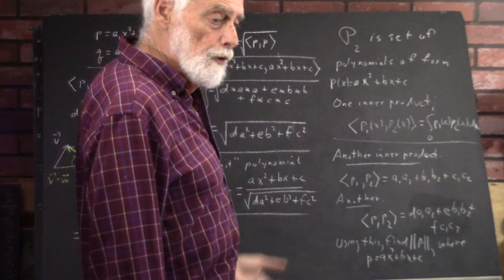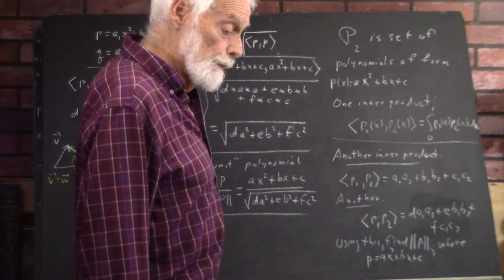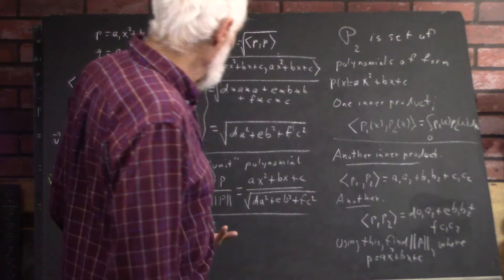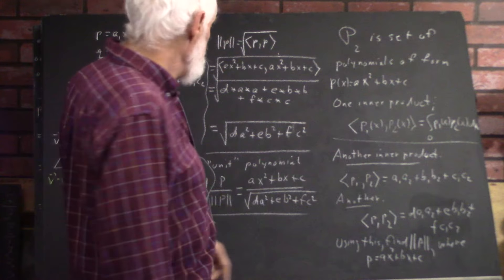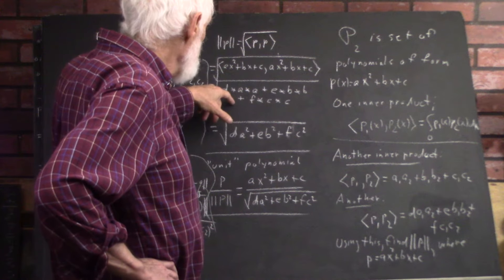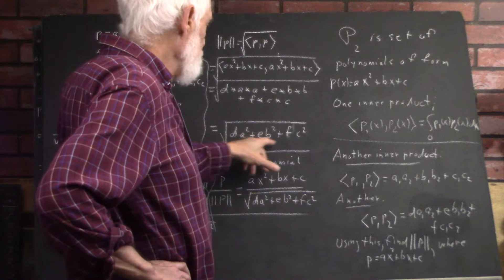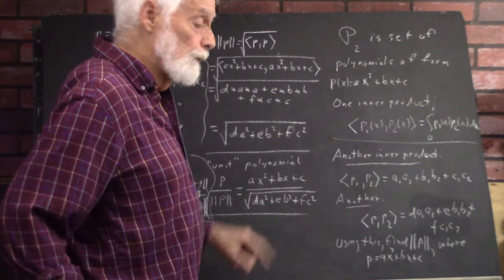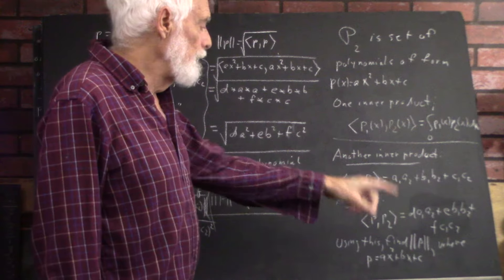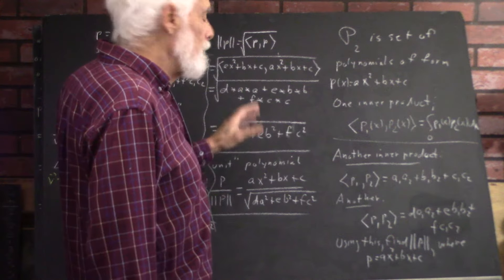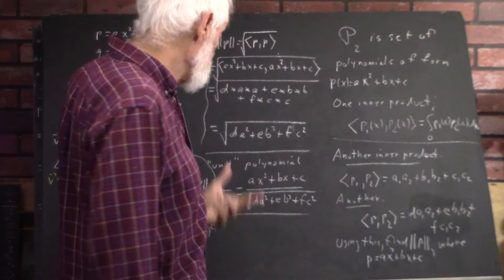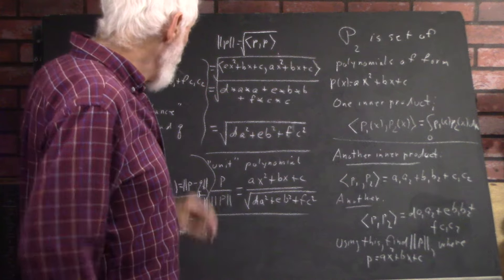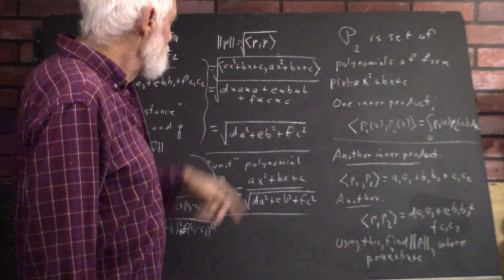You might wonder why we do this — I can't give you a good answer for this arbitrary inner product right off the top of my head, but it's typical of things we often need to do. Since a times a, b times b, c times c are a squared, b squared, c squared, the magnitude is just the square root of d·a² plus e·b² plus f·c². If d, e, and f were all one, this would look a lot like the Pythagorean theorem in three dimensions, though these are polynomials, not arrows.